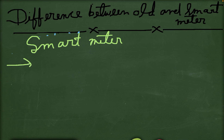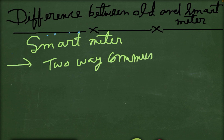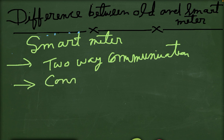In the case of the old meter there is one-way communication, but in the case of the smart meter there is two-way communication. The term 'smart meter' also means that the facility of internet is available — it is connected to the internet.